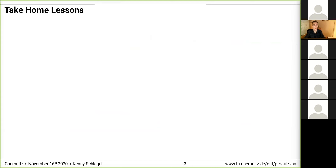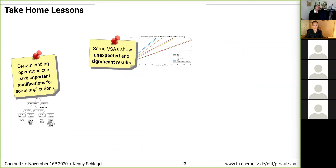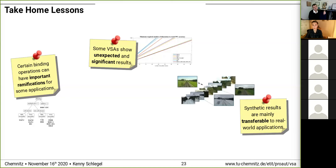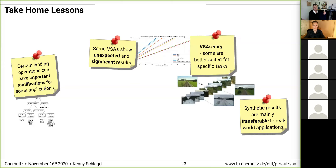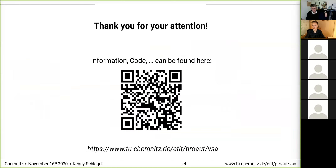To summarize the important insights of our comparison: certain binding operations can have important ramifications for some applications — remember the taxonomy. Some VSAs show unexpected and significant results — remember the bundling capacity experiment. Synthetic results are mainly transferable to real-world applications. Some VSAs vary a lot, and some are better suited for specific tasks, which has to be taken into account when selecting the best VSA. Finally, our MATLAB toolbox is available. We hope this systematization creates better access to the topic. Information and code can be found on our webpage.